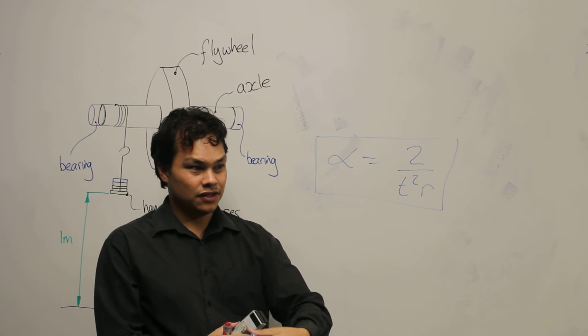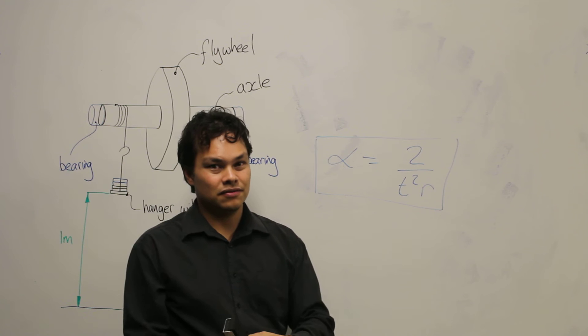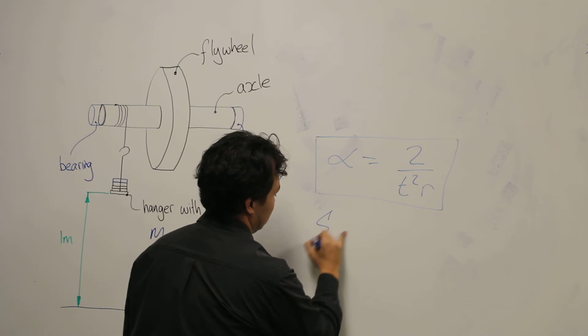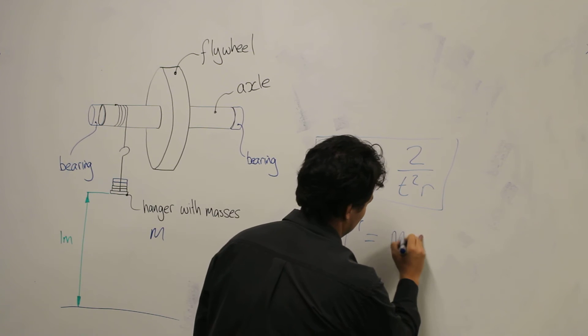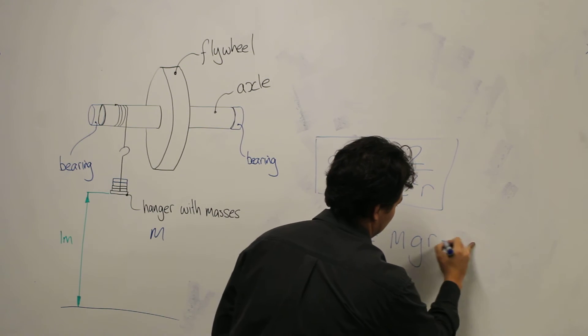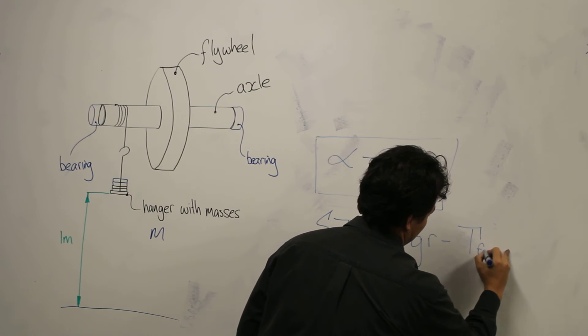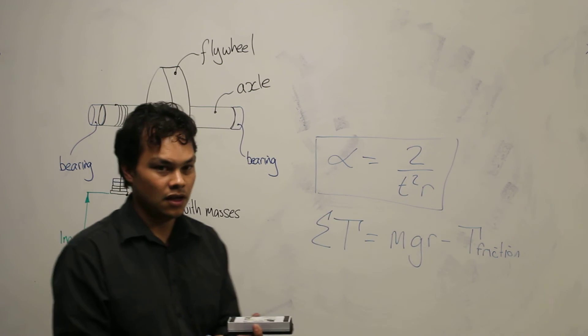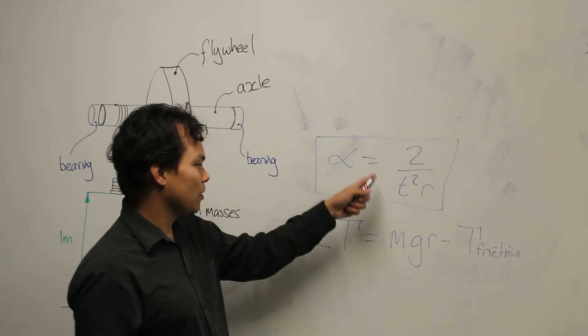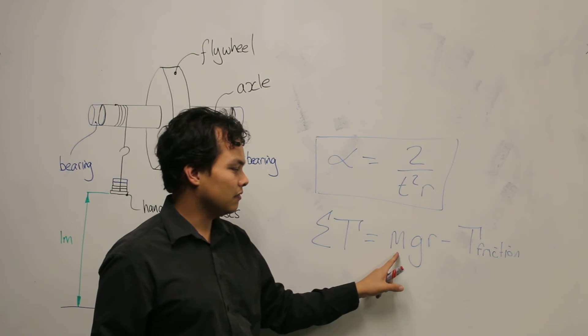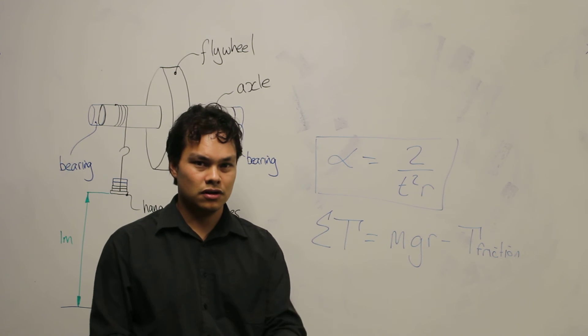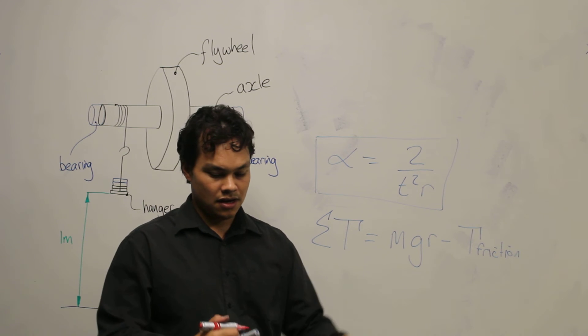In the previous video, we found a formula to find the total torque on the system. And we can use both the value of time and the value of mass to calculate angular acceleration and torque respectively.